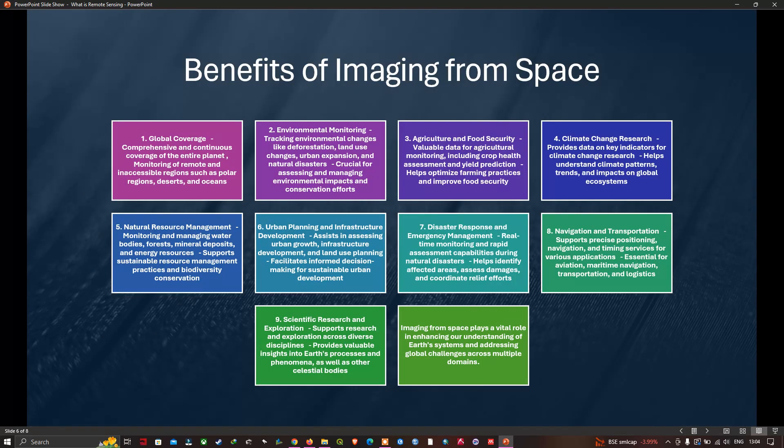The benefits of imaging from space include global coverage - comprehensive and continuous coverage of the entire planet and monitoring of remote and inaccessible regions such as polar regions, deserts and oceans. Environmental monitoring - tracking environmental changes like deforestation, land use changes, urban expansion and natural disasters, which is crucial for assessing and managing environmental impacts and conservation efforts. Agriculture and food security - providing valuable data for agricultural monitoring including crop health assessment and yield predictions.